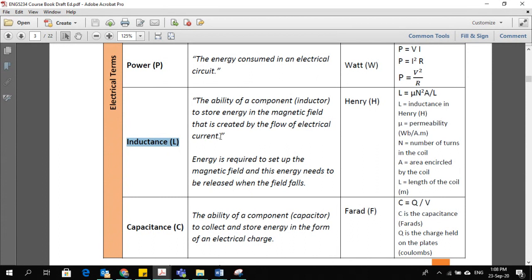When current flows through the inductor, as you know whenever current flows there is a magnetic field, so the magnetic field is produced around that inductor. This component has the ability to store energy in the magnetic field. That magnetic field is created by the flow of electrical current. The energy is required to set up the magnetic field, and this energy needs to be released when the field falls. It simply means when it is storing energy into the magnetic field while the circuit is working, while current is flowing, when you switch off the current, when you switch off your circuit, that energy which was stored in the magnetic field will be released out of the inductor as current. The current will flow into the circuit.